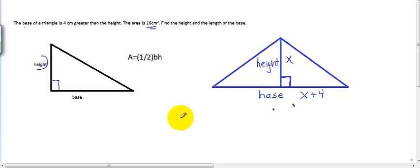Now, the other piece of information we know is that the area is 1 half the base times the height. So in this case, that means that our area is equal to 1 half x plus 4 times x. But our area is 16 square centimeters. So let's fill that in. 16 is equal to 1 half times x plus 4 times x.